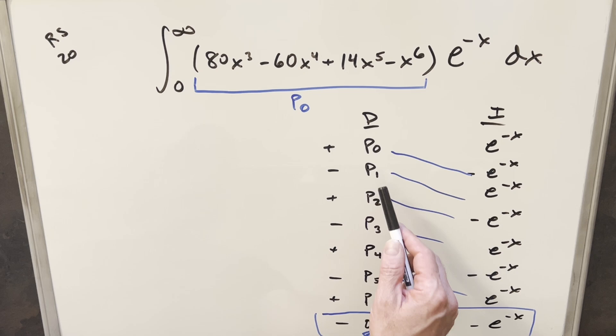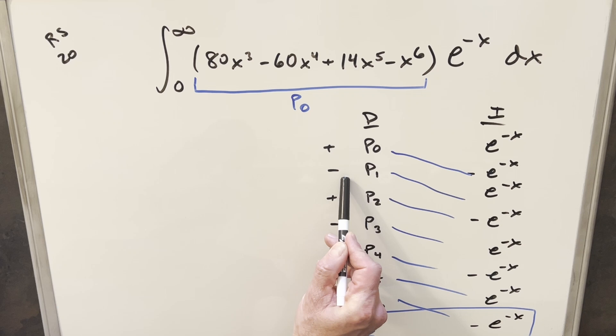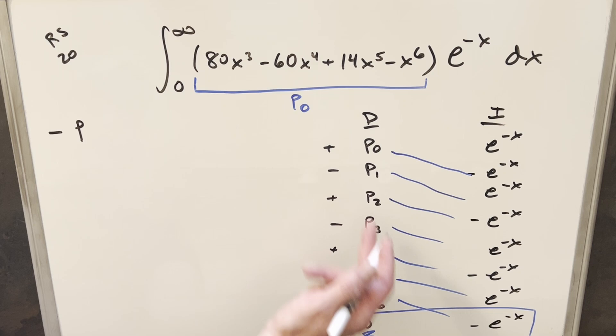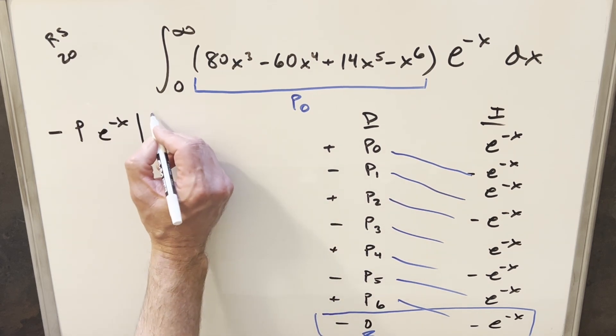And now from here, rather than evaluating each of these individually, let's kind of generalize it because all these are going to be polynomials times e^(-x). Notice in every case, we're going to have a minus sign in front because of the interchanging situation. So in every case, we're going to be evaluating minus P for some polynomial, one of these polynomials, times e^(-x). And we're evaluating this from zero to infinity.